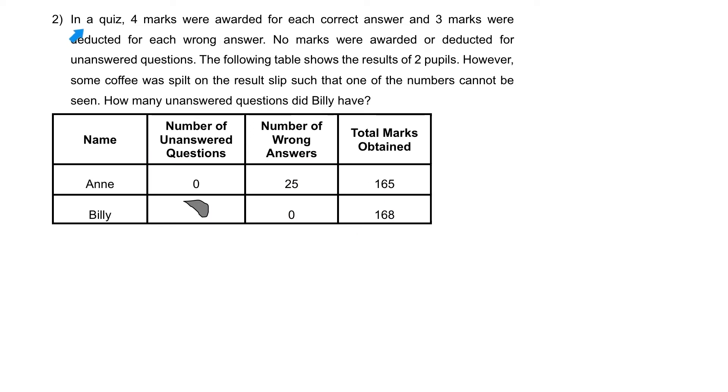Question 2: In a quiz, 4 marks were awarded for each correct answer and 3 marks were deducted for each wrong answer. No marks were awarded or deducted for unanswered questions. The following table shows the result of two pupils. However, some coffee was spilled on the result slip such that one of the numbers cannot be seen. How many unanswered questions did Billy have?